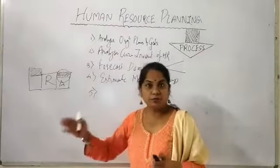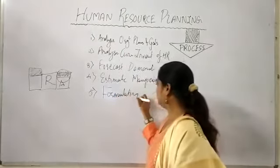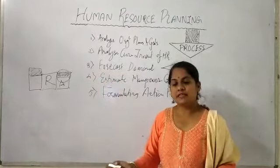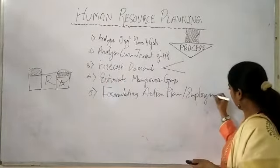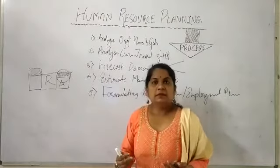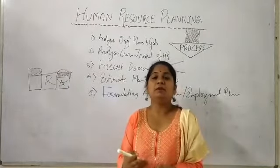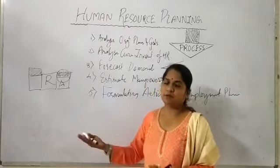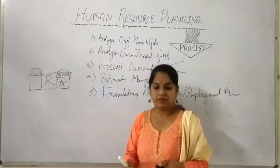If there is a surplus, we remove people. If there is a deficit, we fill the gap. The next stage is formulating the action plan. Once you know whether there is a surplus or deficit, you take action — that action plan itself is an employment plan. In case of deficit, we recruit. The deficit can also be filled with current manpower by training, enhancing, or developing them from one stage to another — training new or existing workers and transferring between departments. If there is a surplus, we can deploy, transfer, or lay off employees.